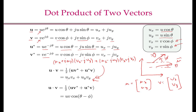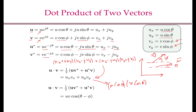In polar form, the dot product can be written as u·v·cos(θ - φ). To see this, you substitute ux = u·cos(θ), vx = v·cos(φ), uy = u·sin(θ), vy = v·sin(φ), and then ux·vx + uy·vy becomes u·cos(θ)·v·cos(φ) + u·sin(θ)·v·sin(φ), which simplifies to u·v·cos(θ - φ).